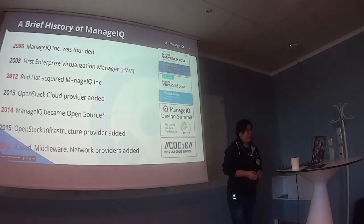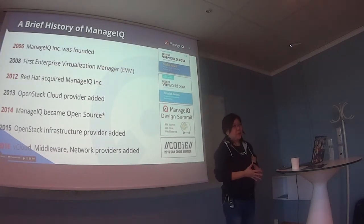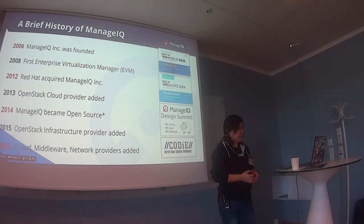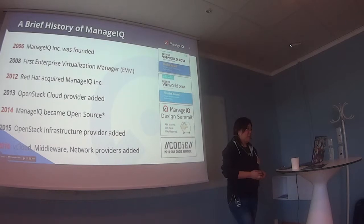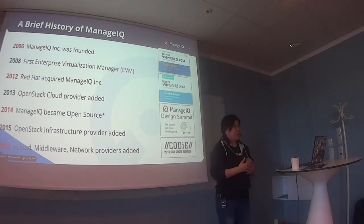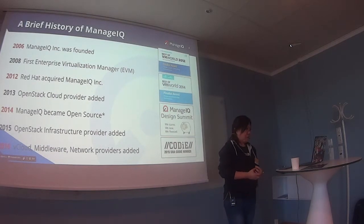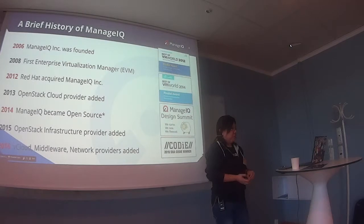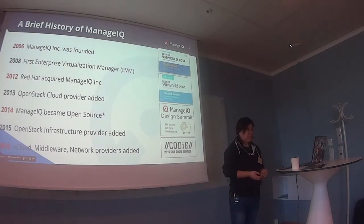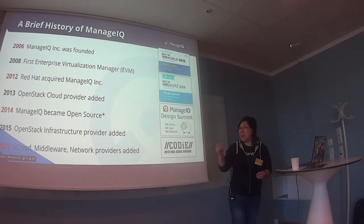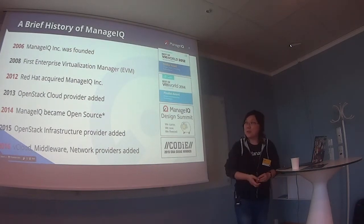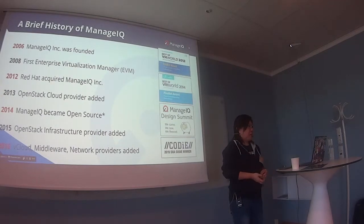Now, something about ManageIQ. This project has actually been around for a while — it was established in 2006. Red Hat acquired ManageIQ in 2012, and it took about one and a half years to get the code in shape and set up processes for open source: accepting contributions, licensing, and everything. So it was open sourced in 2014. Since then there have been a few awards, a couple of design summits, and milestones with different cloud providers.